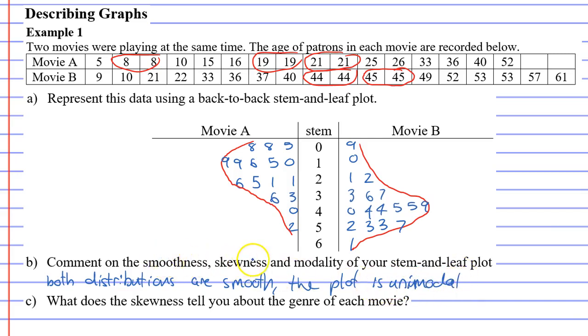Next, skewness. Movie A is positively skewed, and that's because most the data is grouped up here at the top section. Movie B would be negatively skewed since most the data is grouped down the bottom.